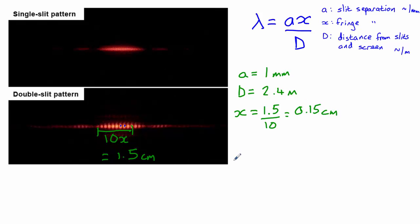Now we need to be really careful with all of our units here. So let's plug these into the equation. Lambda equals 1 times 10 to the minus 3, because that's millimeters, multiplied by 0.15 times 10 to the minus 2, because that one is centimeters, divided by 2.4 meters. We don't need to do anything with that one.